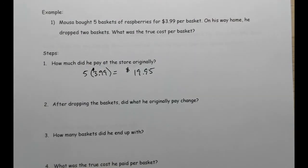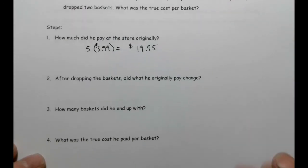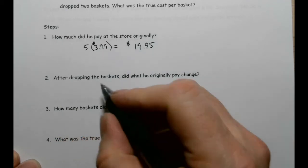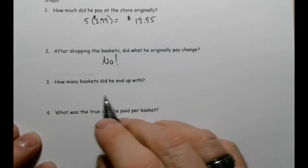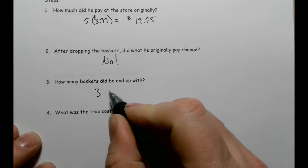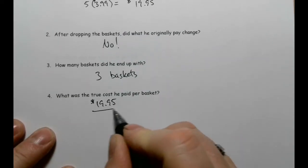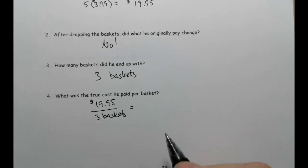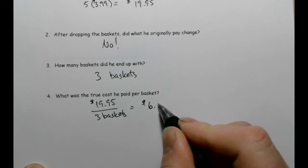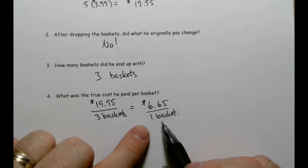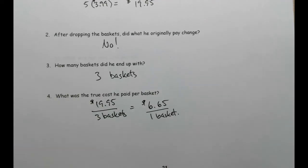On the way home, he drops the baskets. After dropping the baskets, did what he originally paid change? No, he still paid $19.95. Now the question is, how many baskets? That means he only had three baskets. So he still paid $19.95, but this time it was for three baskets. How much did he pay per basket? So we're going to figure out the unit cost now. $19.95 divided by three, and it's $6.65 per one basket. So you can see this is actually what he paid per the item that he got. He thought he had five baskets of fruit, he actually only ended up with three, but he still paid $20. So splitting that $20 up was $6.65 per basket.